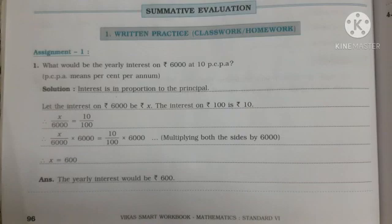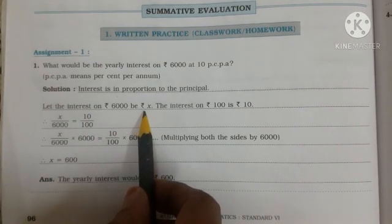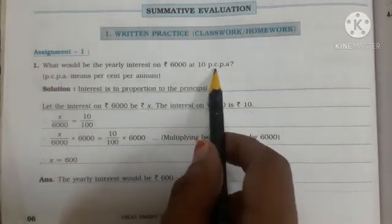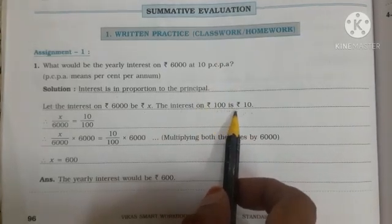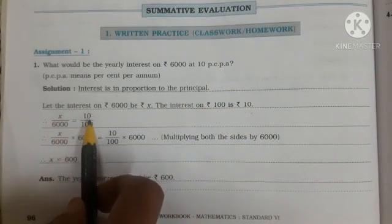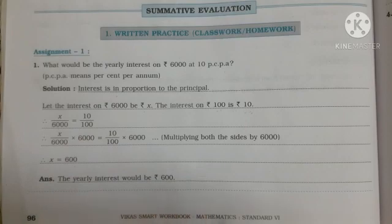Let's solve examples. The first one is being solved for you. What would be the yearly interest on Rs 6,000 at 10 PCPA? Here we have to find interest. Let the interest on Rs 6,000 be X rupees. The interest on Rs 100 is Rs 10 as it is given 10 PCPA. So our ratio is X upon 6,000 is equals to 10 upon 100. After solving, we get the answer Rs 600. So the yearly interest would be Rs 600.